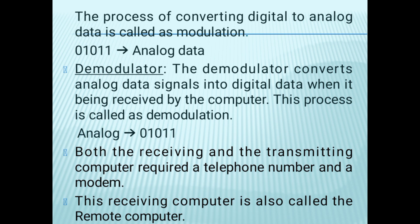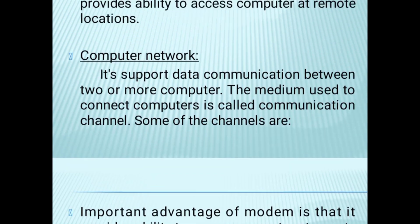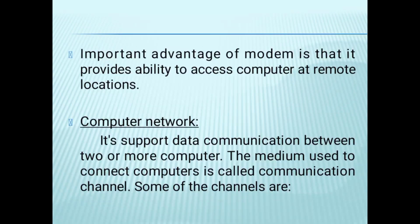The demodulator converts analog data signals into digital data when it is being received by the computer. This process is called demodulation. For receiving and transmitting, the computer requires a telephone number and a modem. The receiving computer is also called a remote computer.